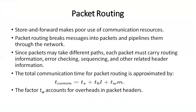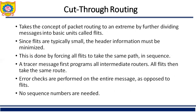Since packets may take different paths, each packet must carry routing information, error checking, sequencing, and other header information. The total communication time for packet routing is approximately given by TCOM = ts + th*L + tw*M, where ts is startup time, th is per-hop time, and tw is per-word time. The factor tw also accounts for overhead in the packet header.